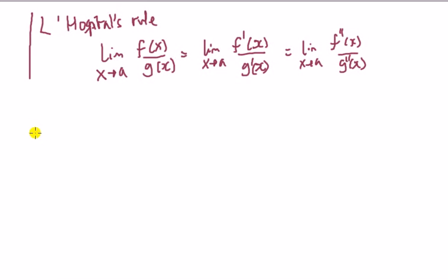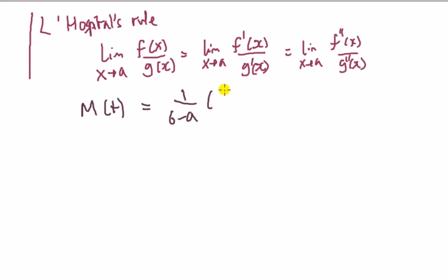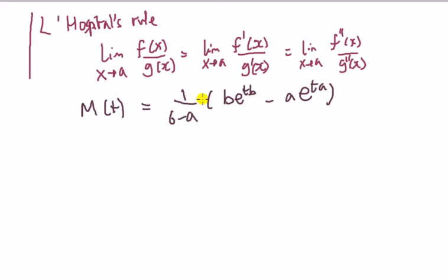That's what we want — it's a fantastic result. So we have the MGF; I'll just write this down again. It is 1 over (b minus a) times (b·e^(tb) minus a·e^(ta)). This was the case when t is not equal to 0.